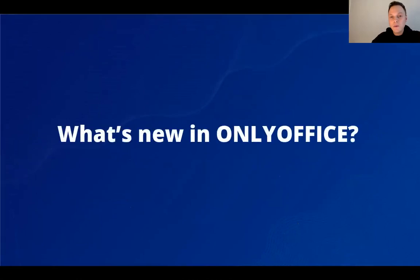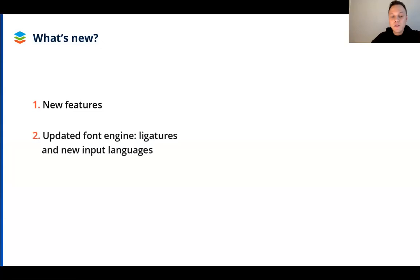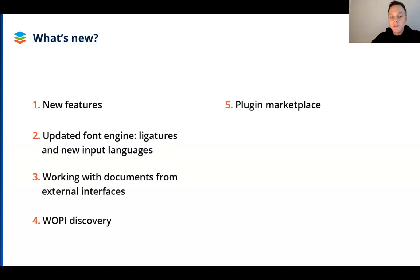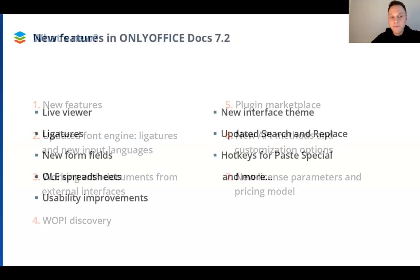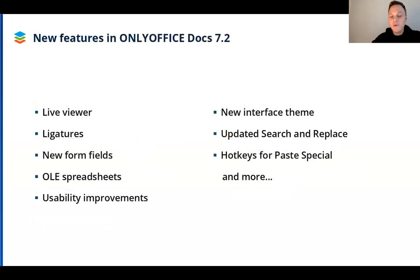So what's new in this version? Version 7.2 brings some new features throughout the suite: an updated font engine, new opportunities for integration and customization for OnlyOffice Docs, built-in instruments, and a plugin marketplace. The Developer Edition now also has even more flexible licensing for the production server, allowing you to reduce production costs. Let's start with a brief overview of new features in OnlyOffice Docs 7.2. New features in the editors bring the overall user experience to a brand new level, with the biggest updates including live document viewing, new font engine updates, forms usability improvements and much more.